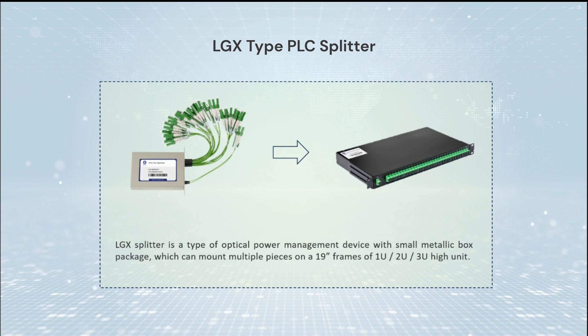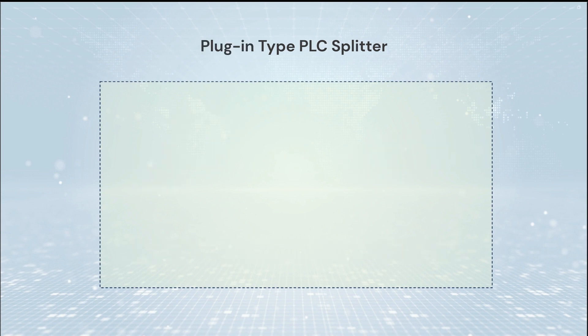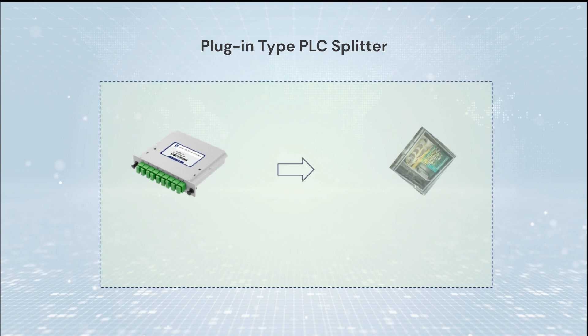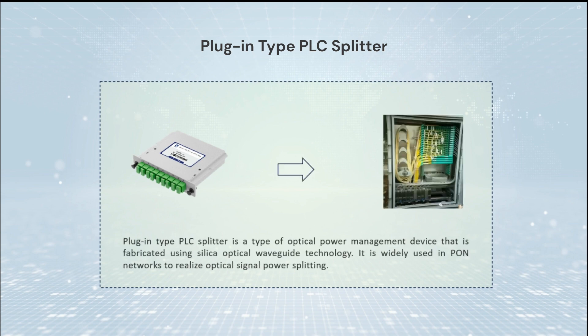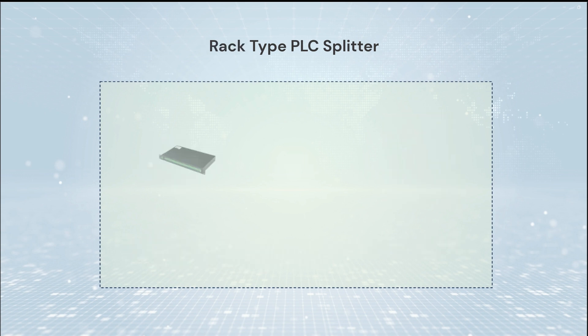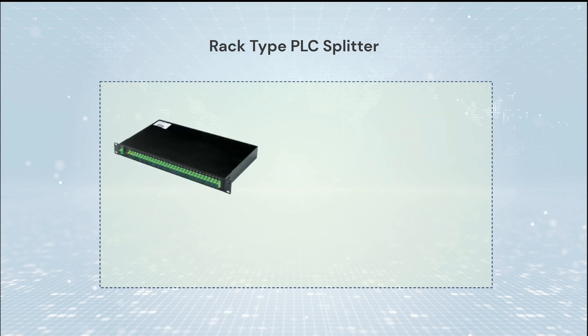The LGX splitter supports 1U, 2U, or 3U high unit configurations. The plug-in type PLC splitter is a type of optical power management device that is widely used in PON networks to realize optical signal power splitting.